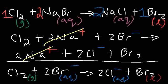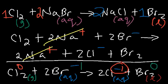The oxidation state for any pure element is zero. Chlorine goes from zero to negative one — it decreased, so chlorine was reduced, making it the oxidizing agent. Bromide went from negative one to zero — increasing on the number line — so its oxidation state went up, meaning bromide lost electrons. Bromide was oxidized, making it the reducing agent in this reaction.